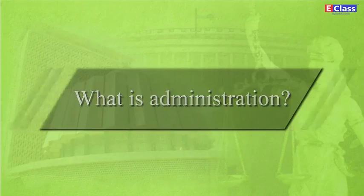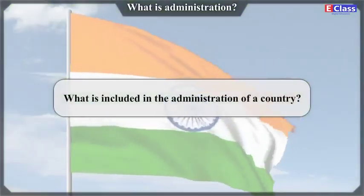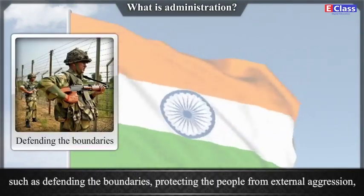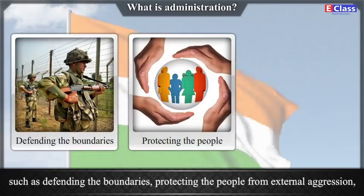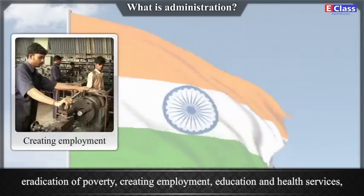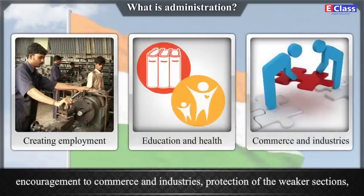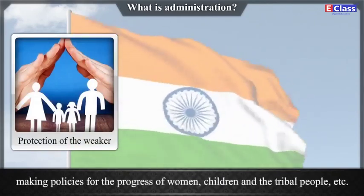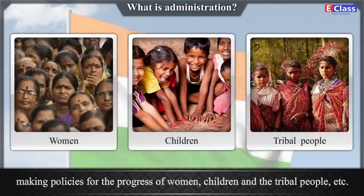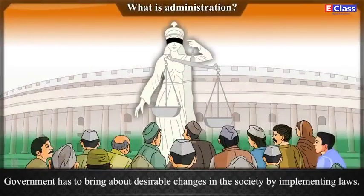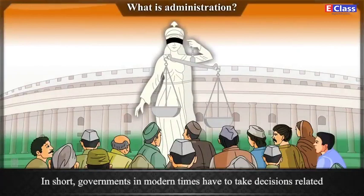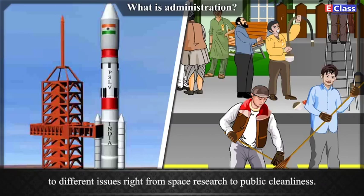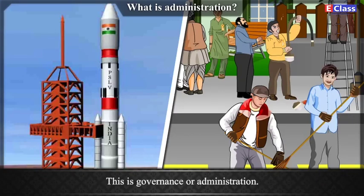What is administration? The government has to make laws relating to several subjects, such as defending the boundaries, protecting the people from external aggression, eradication of poverty, creating employment, education and health services, encouragement to commerce and industries, protection of the weaker sections, making policies for the progress of women, children and the tribal people, etc. The government has to bring about desirable changes in the society by implementing laws. In short, governments in modern times have to take decisions related to different issues right from space research to public cleanliness. This is governance or administration.